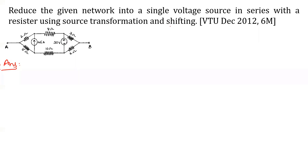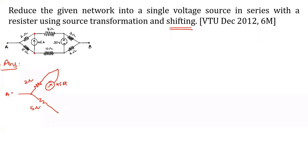First, we apply source shifting. I redraw the network with 2 ohm and 5 ohm resistances. At this node, 45 amperes of current is coming in, and from this node 45 amperes of current is leaving. For that reason, I make use of two current sources each of value 45 amperes, and I short this node. This is called source shifting.